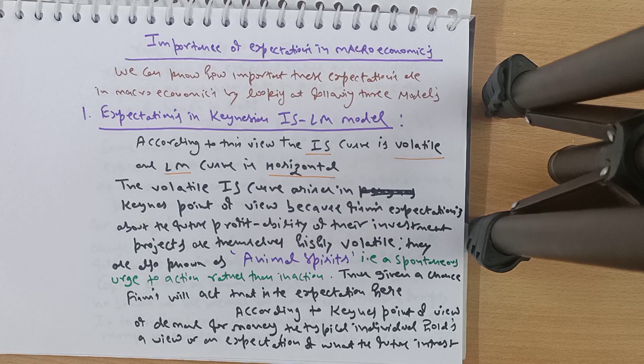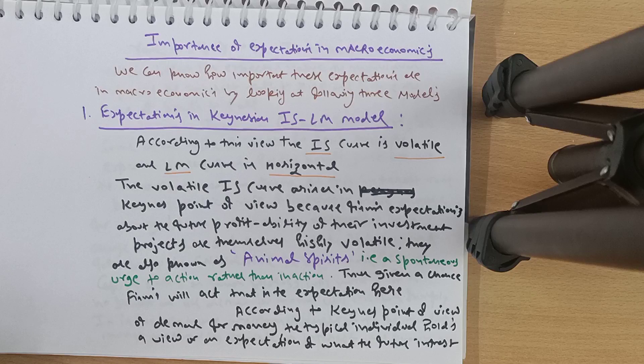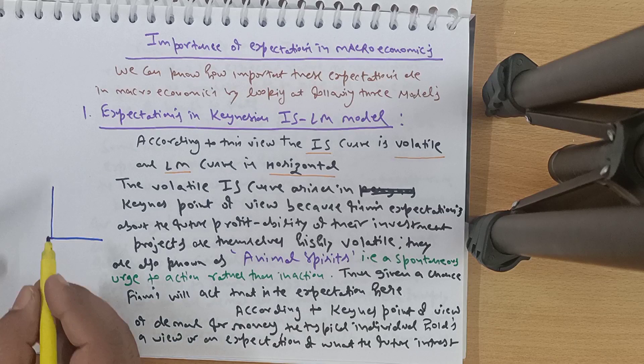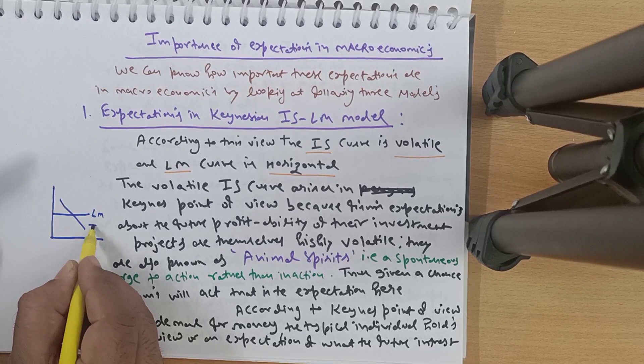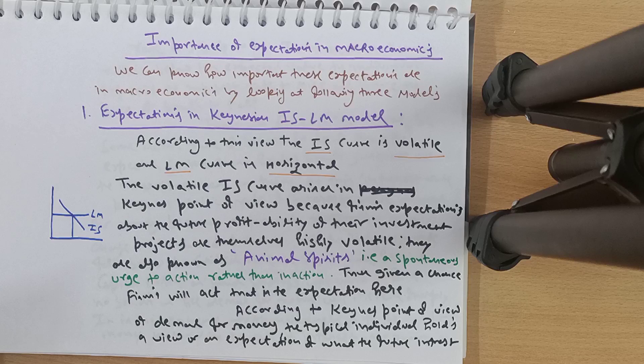Three main examples illustrate why expectations play a very important role in macroeconomics. The first is expectations in the Keynesian IS-LM model — also called the liquidity trap, where the LM curve is horizontal and the IS curve is downward sloping. In the last chapter, expansionary fiscal policy had a great effect because there is no crowding out. Keep that in mind.